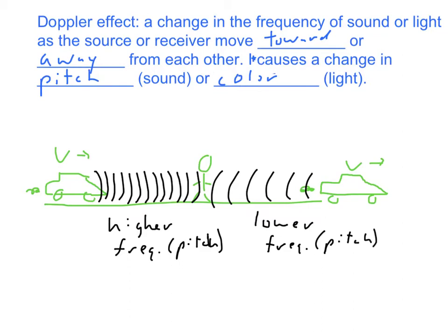So that's why we get that effect of cars going past, especially if you think about it at a racetrack. As it's coming toward you, it's a high pitch, and as it goes past you, it's a low pitch.